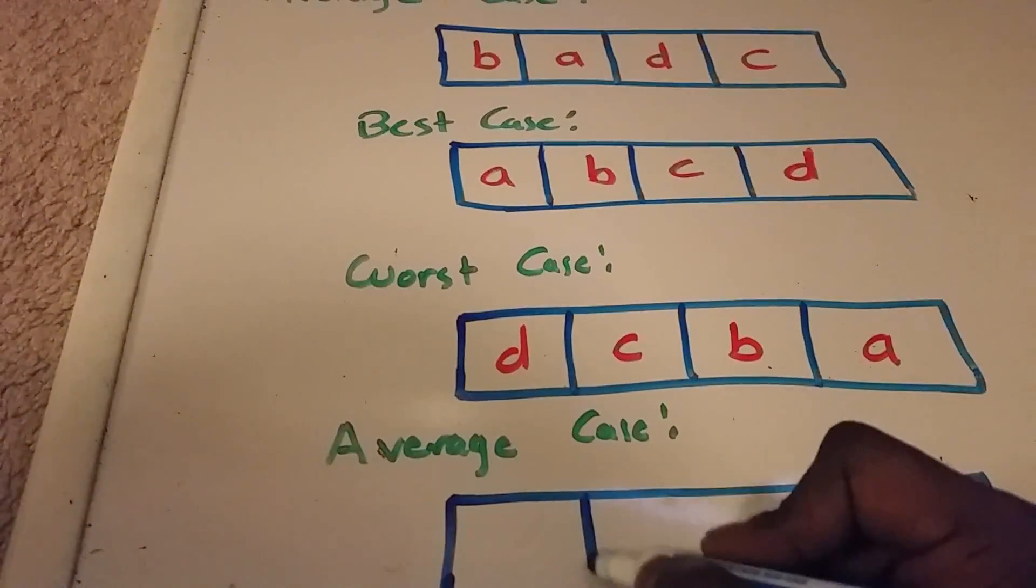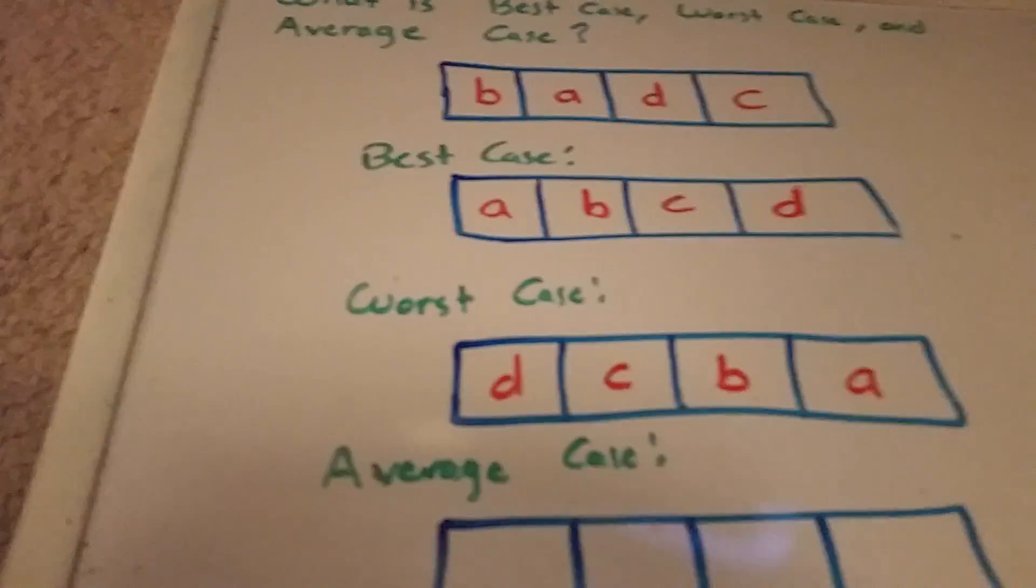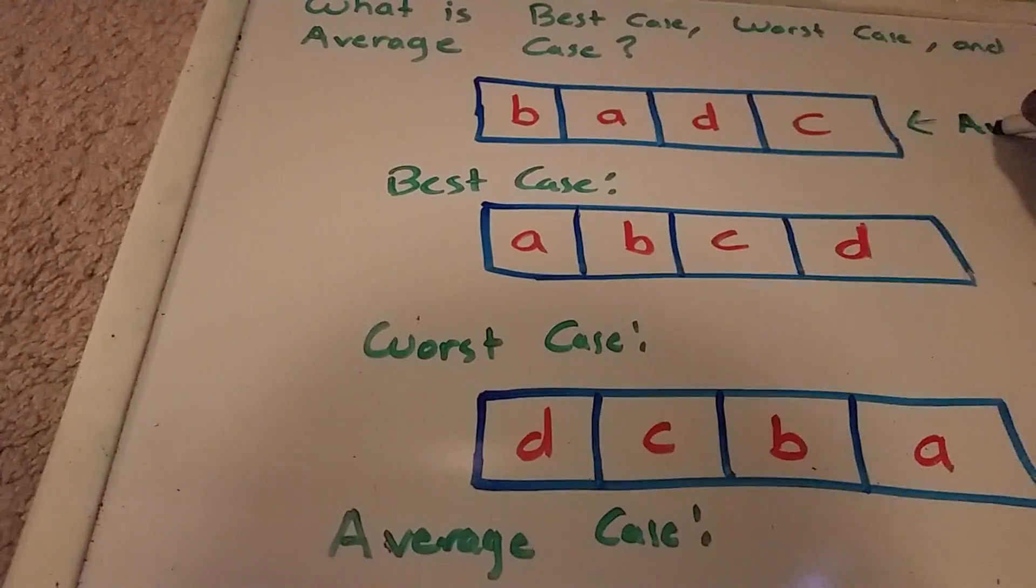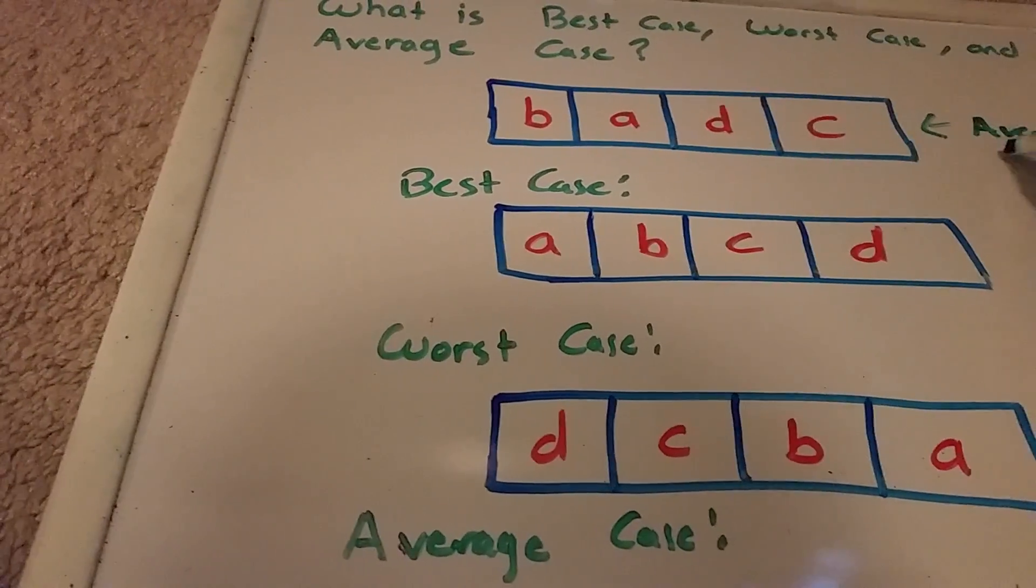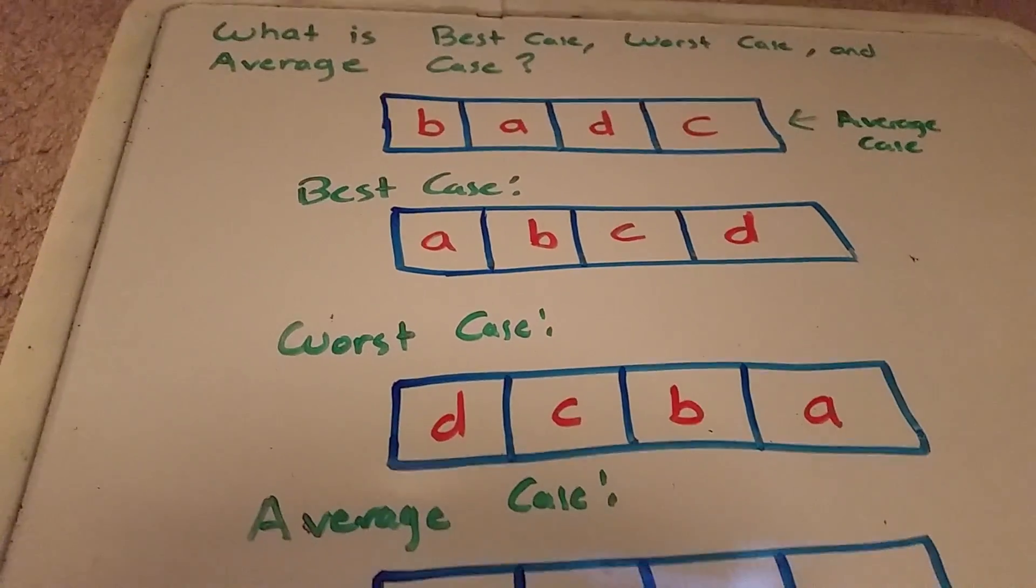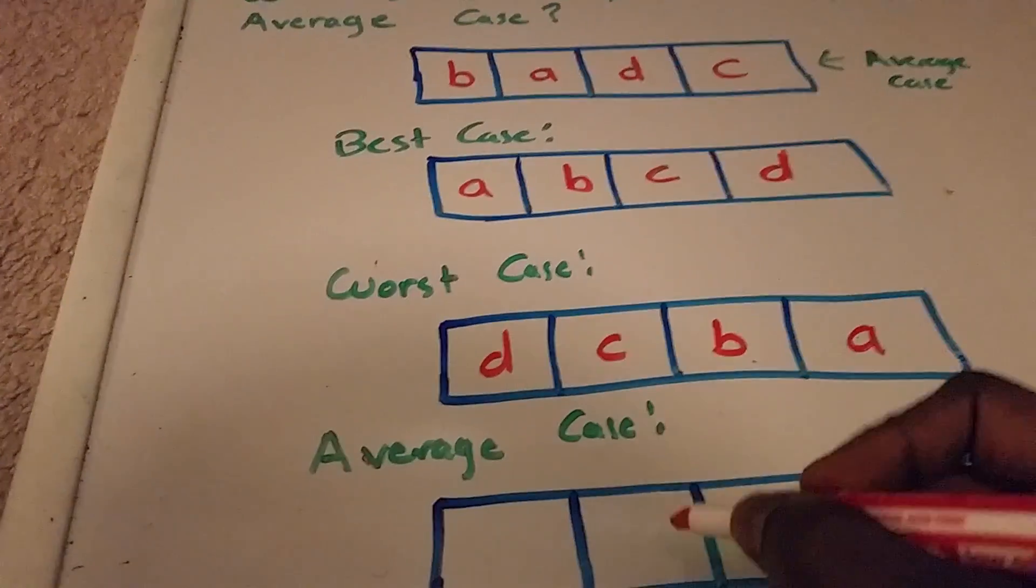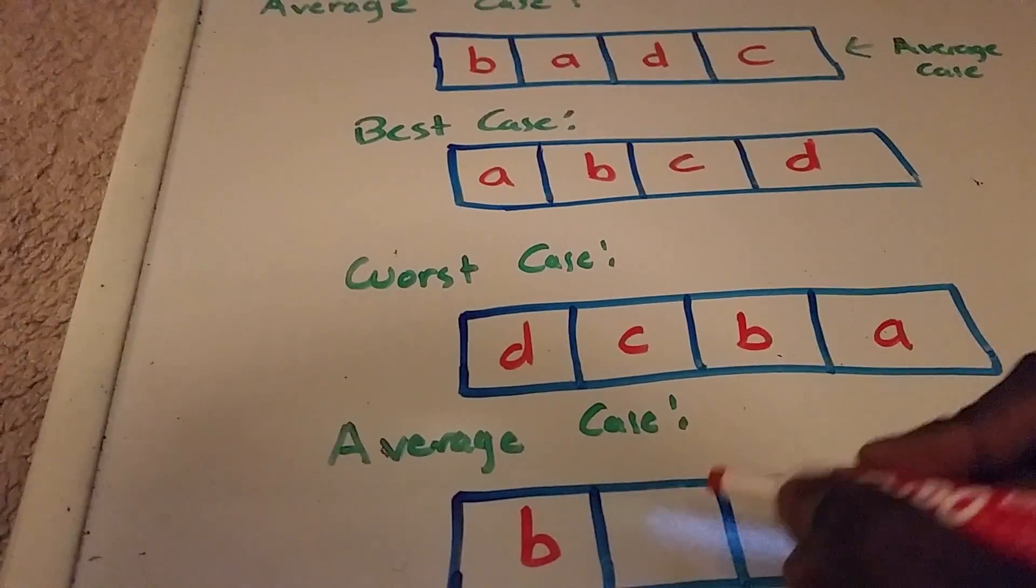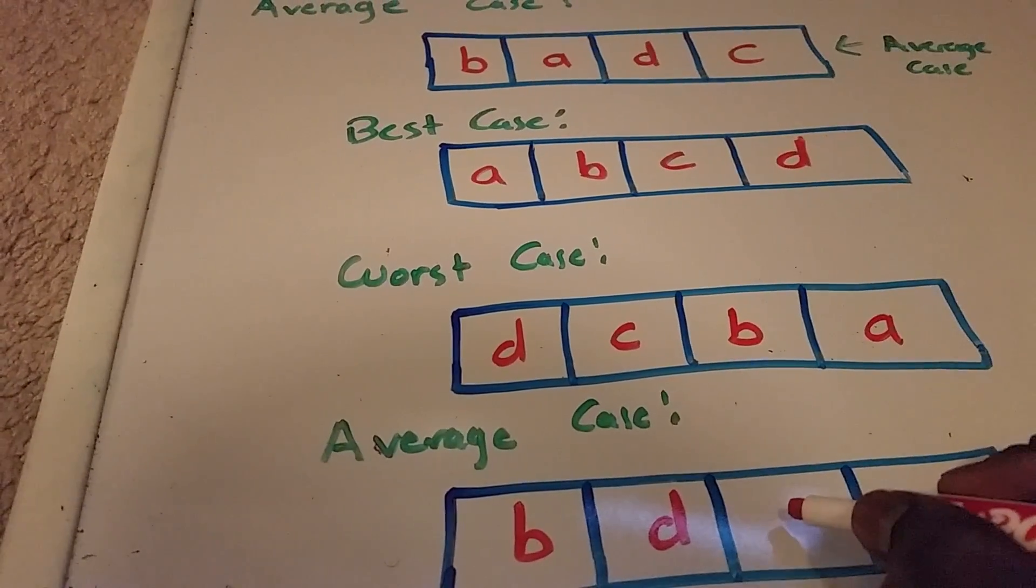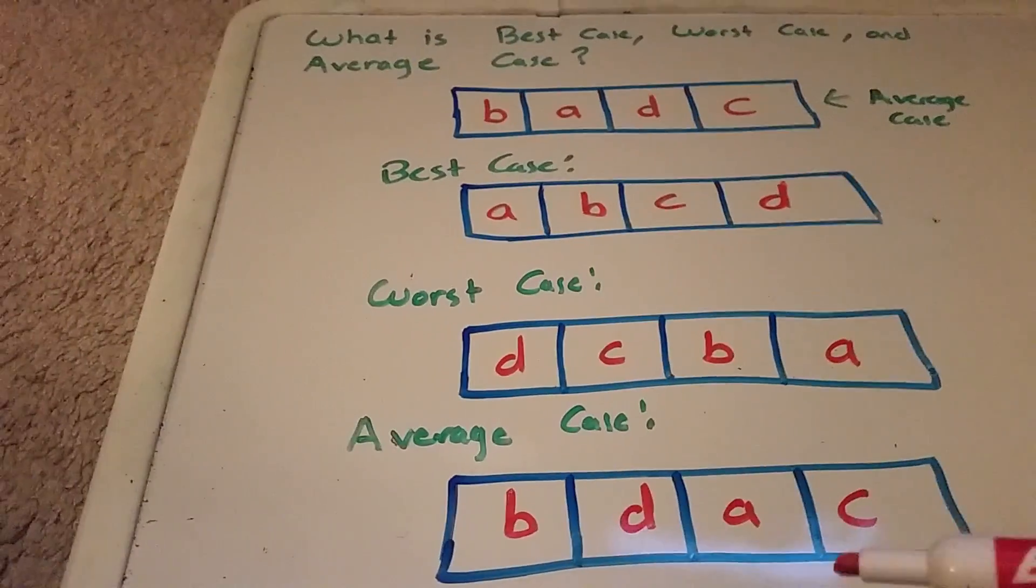So you can think of it as a random assortment of this list. Here would actually be an average case where the list is in no type of order. And let's see if I can write another average case. Okay. And so that would be the average case.